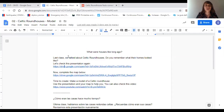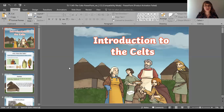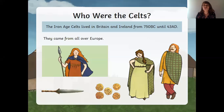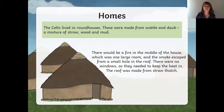Last class we talked about Celtic roundhouses. Do you remember what the homes look like? Let's check this presentation again. I'm using the computer because I'm going to share the presentation — it's the same one we had last Zoom history class. Introduction to the Celts: who were the Celts? The Iron Age Celts lived in Britain and Ireland from 750 BC to 243 AD — a long, long time ago.